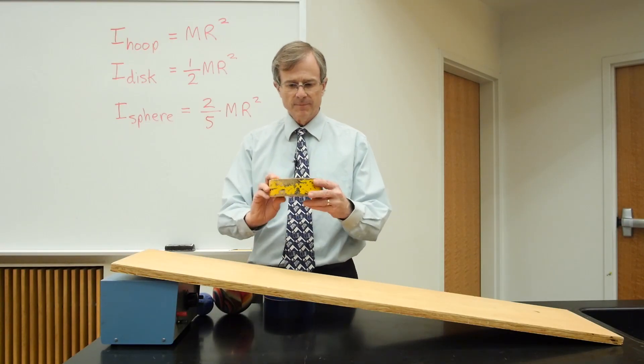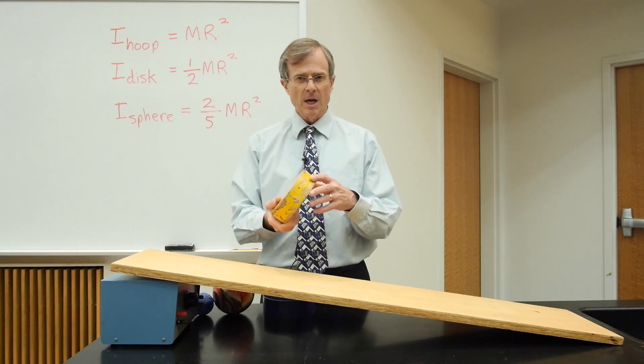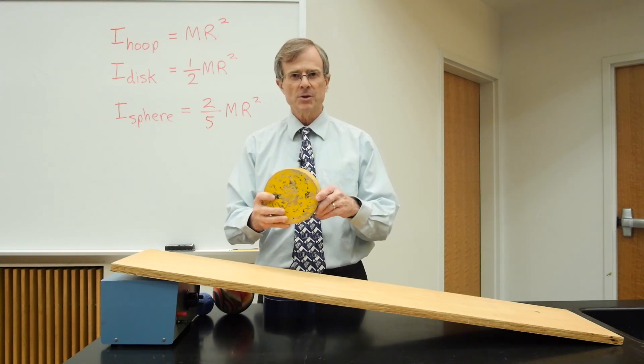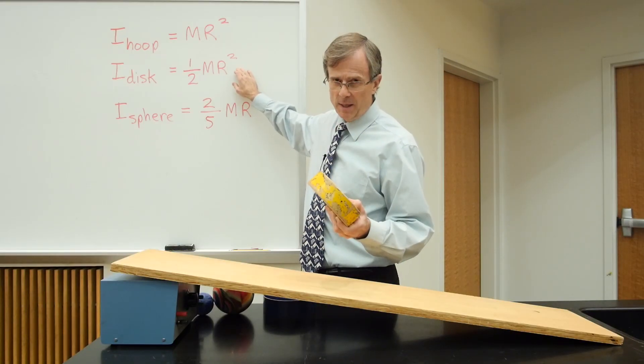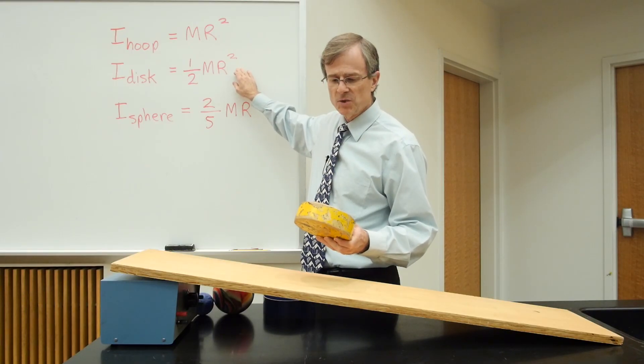Next is a disk. This is just a solid piece of wood that's cut in the shape of a circle. Its moment of inertia is one-half times its mass times its radius squared.